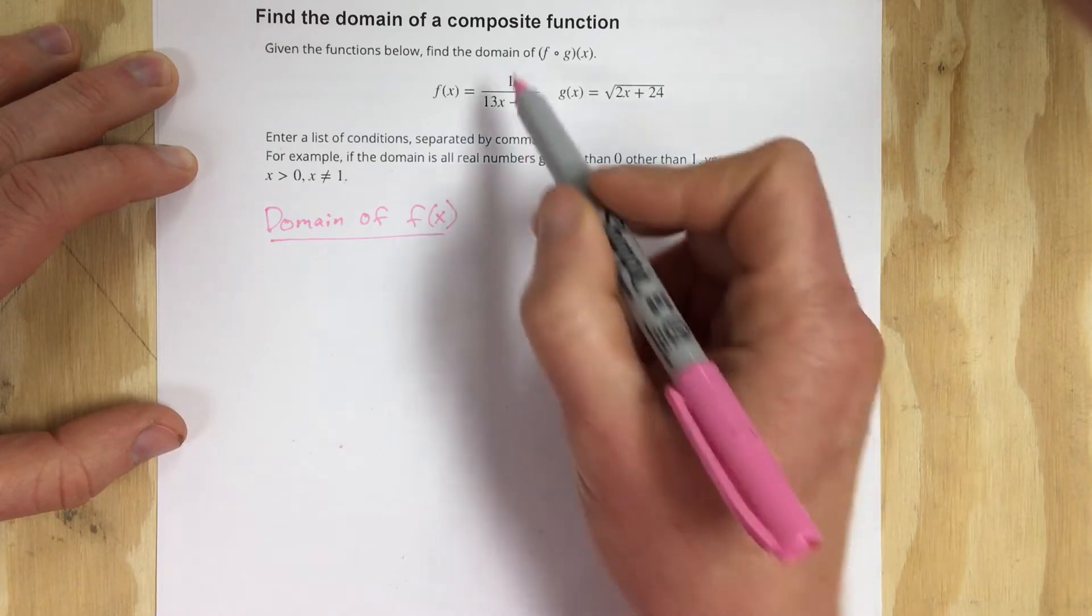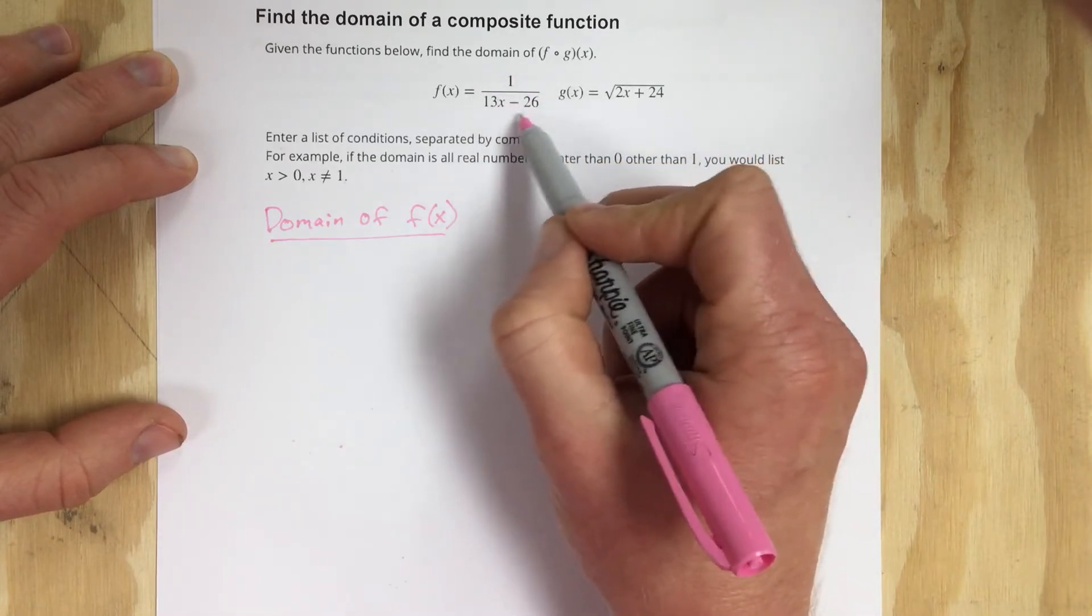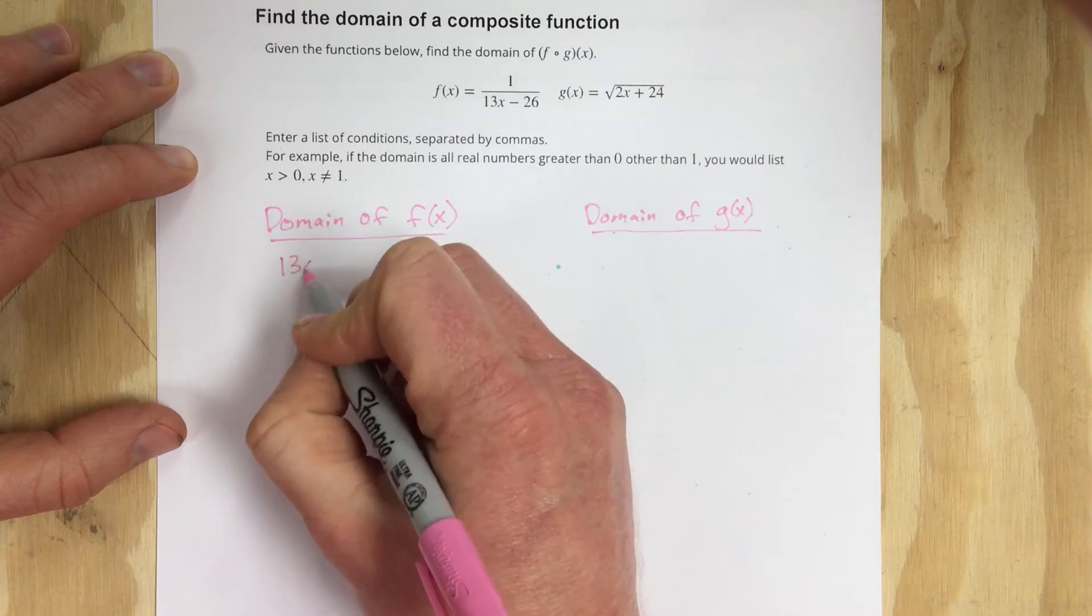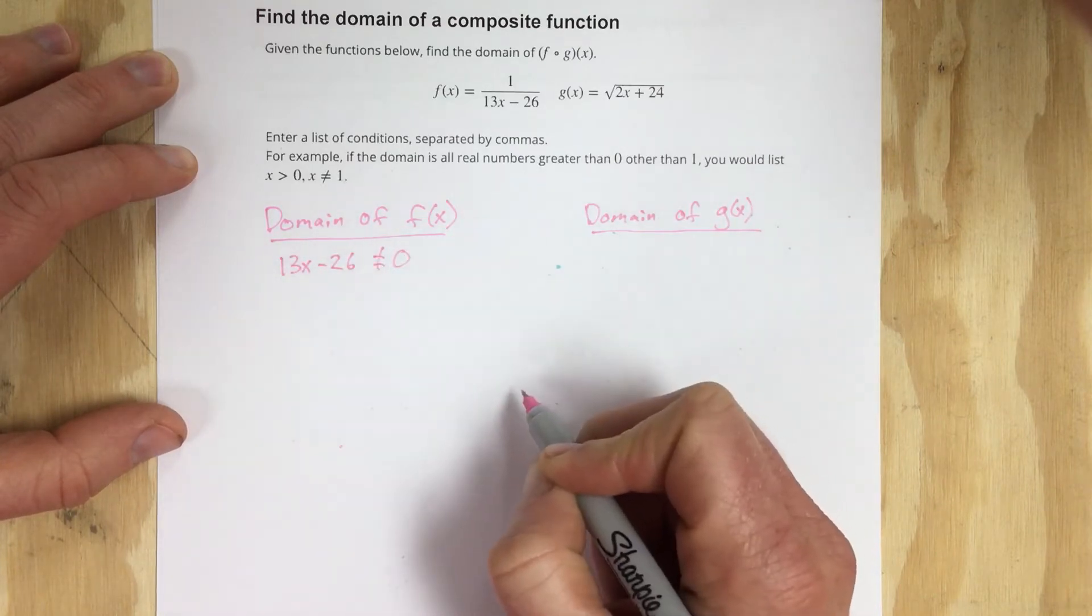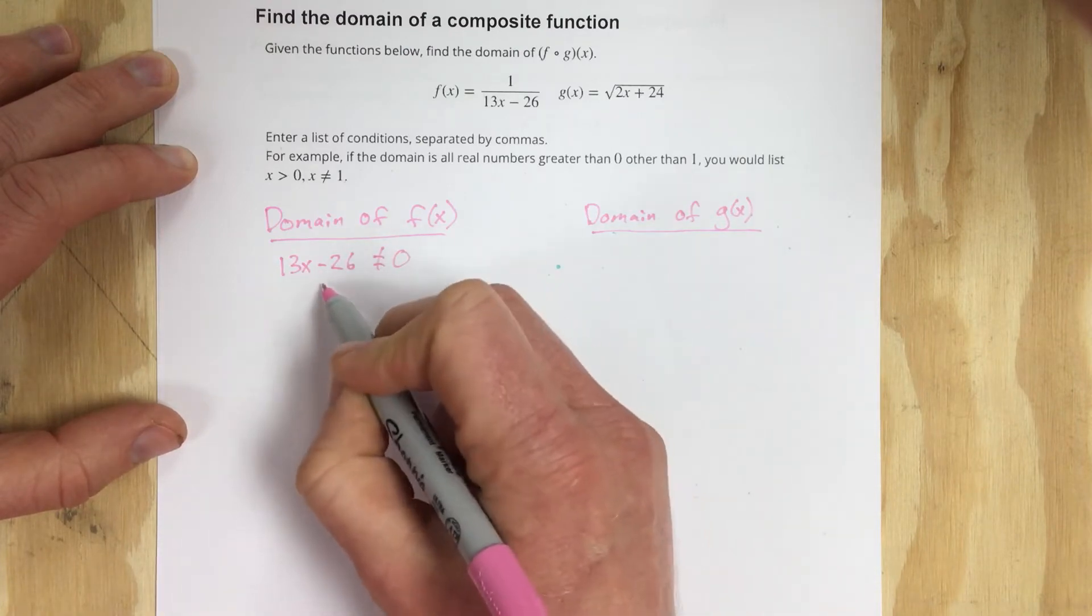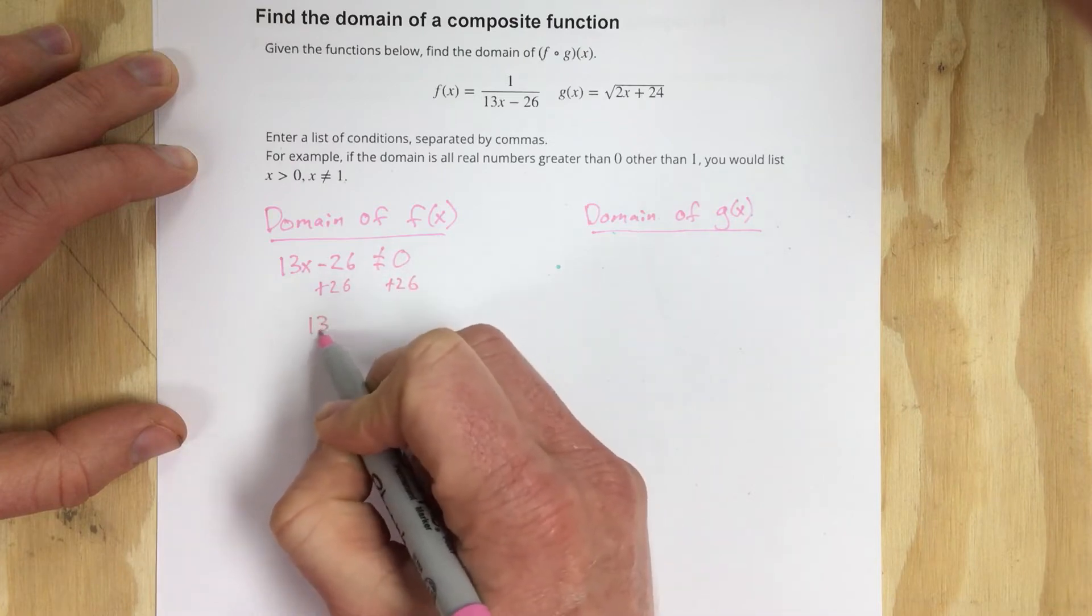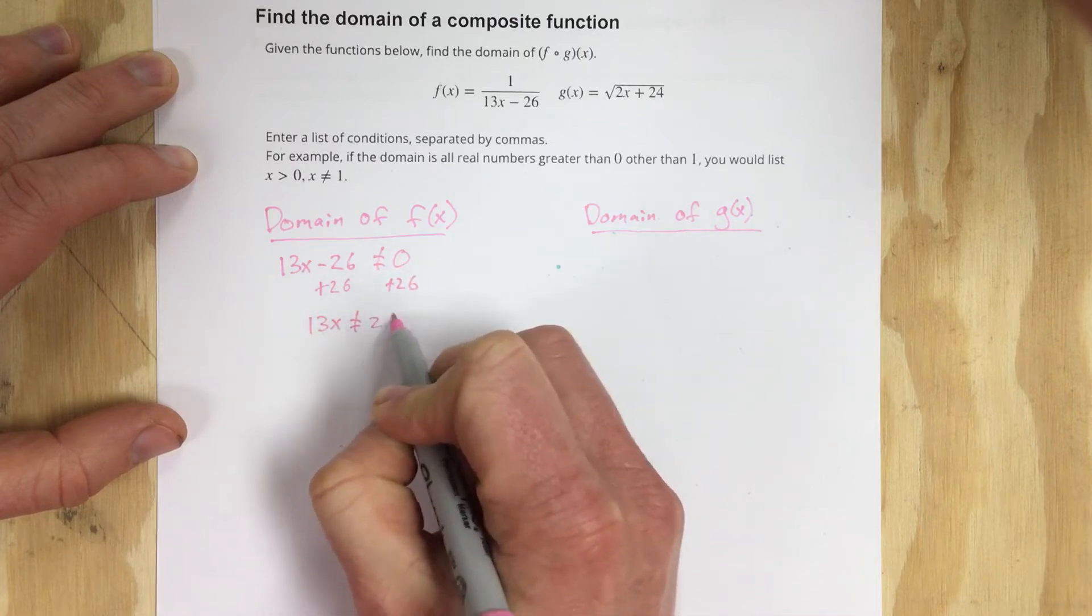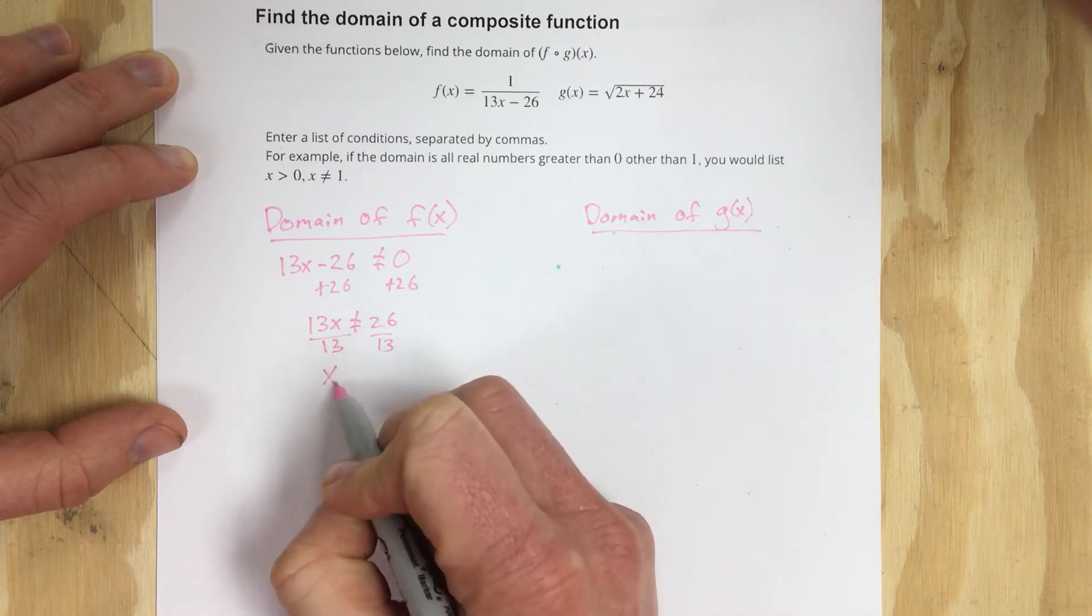Domain of f of x - well that's a rational function. Because it's rational you can't divide by 0, so we're going to say 13x minus 26 cannot equal 0. Then we're going to solve this. We'll find the x value that doesn't work, so that's plus 26. So 13x cannot equal 26, divide by 13, x cannot equal 2.